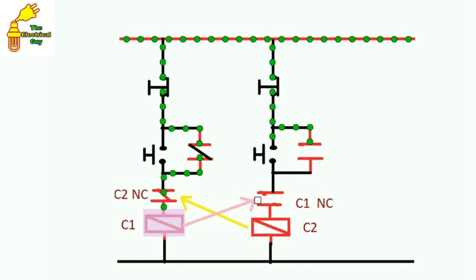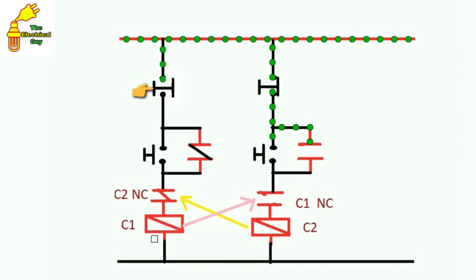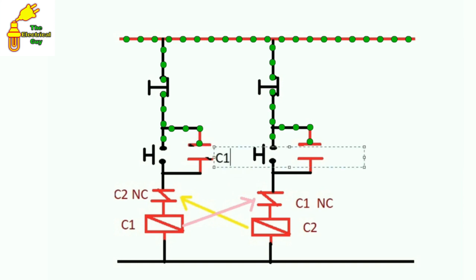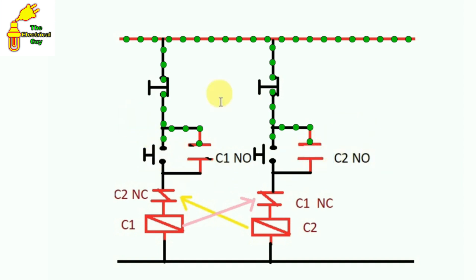Current flows from here. If we release this push button, it goes back, but this auxiliary contact is now NC so current is flowing from here to the contactor and this contactor remains picked up. But along with this, when C1 contactor is on, the C2 side becomes NO — this power supply line is open from here. Now even if we press this start push button for C2, current will not flow further because it is open from here. This is why both contactors cannot be turned on together. Till the time C1 remains on, C2 will not become NC.